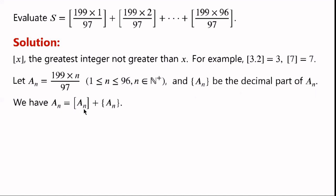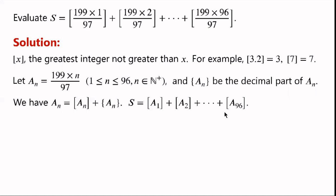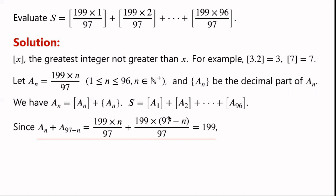We have aₘ equals the integer part ⌊aₘ⌋ plus the decimal part {aₘ}. The first term is the integer part and the second is the decimal part. Then S can be written as ⌊a₁⌋ plus ⌊a₂⌋ plus so on plus ⌊a₉₆⌋.